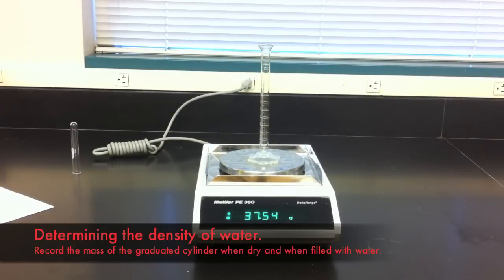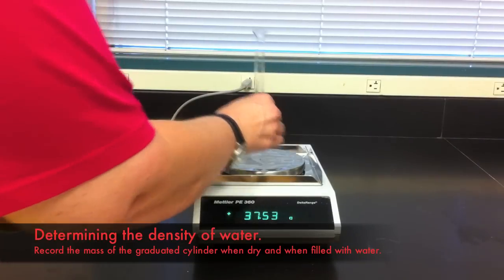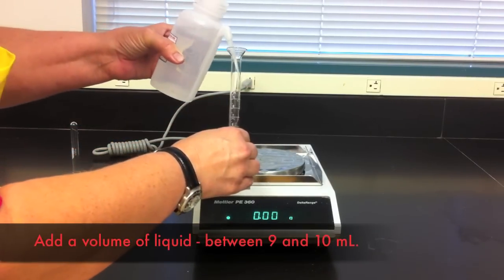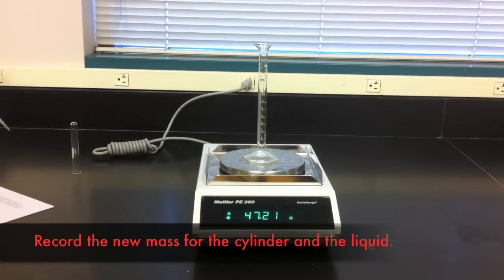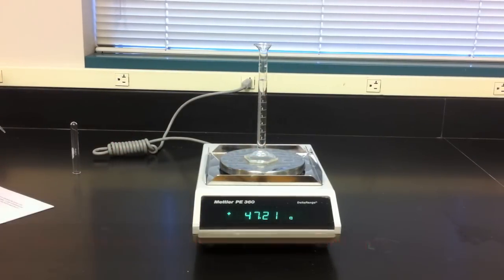Next you're going to test the measurement of the density of a liquid. For our purposes we'll start with measuring the density of water. First you'll need to measure the mass of a graduated cylinder, then fill it to about 9 or 10 milliliters of volume and record the mass once again.